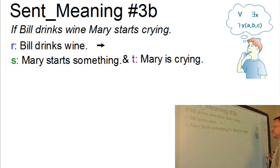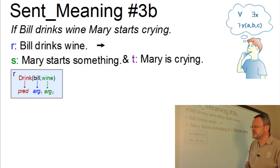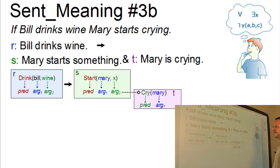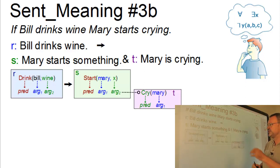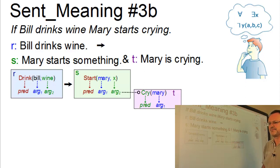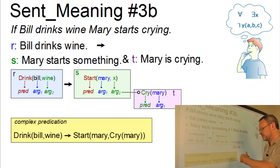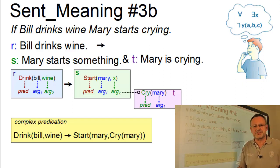The first predication is a simple predication of the type 'drink Bill wine', so we have a two-place predicate with two arguments, Bill and wine. The second predication realizes a complex proposition. We have S: a two-place predicate 'start Mary something', and then T — the second predication — is an argument of S, realizing the embedded proposition. The result is a complex predication: if Bill drinks wine — 'drink Bill wine' — then 'starts Mary cry Mary', so Mary starts something and what she starts is that she cries.